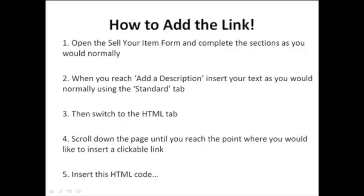Here's how to add the link. First, open the Sell Your Item form as you would normally and complete all the sections — that's the title, a subtitle if you're adding one, and your images. When you reach the 'Add a Description' part, insert your text as you would normally using the Standard tab, which is the default. You then need to switch over to the HTML tab, which is right next to the Standard tab.